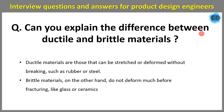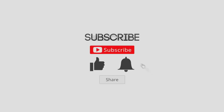Can you explain the difference between ductile and brittle materials? This is a basic question commonly asked for product design engineers. Ductile materials are those that can be stretched without breaking — examples include rubber and steel. Brittle materials, on the other hand, will not deform; they will directly break or fracture — examples include glass and ceramic.